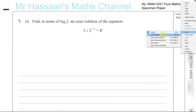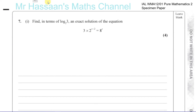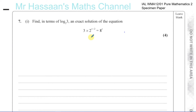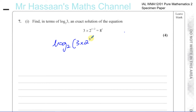So what we can do here — they want it in terms of log to the base 2. What I'm going to do is take log to the base 2 of both sides, because this is a product: it's one term and this is one term. So I'm going to say log to the base 2 of 3 times 2 to the power of x minus 2, equals log to the base 2 of 8 to the power of x. Why did I choose log to the base 2? Because they told us to find in terms of log to the base 2 of 3.